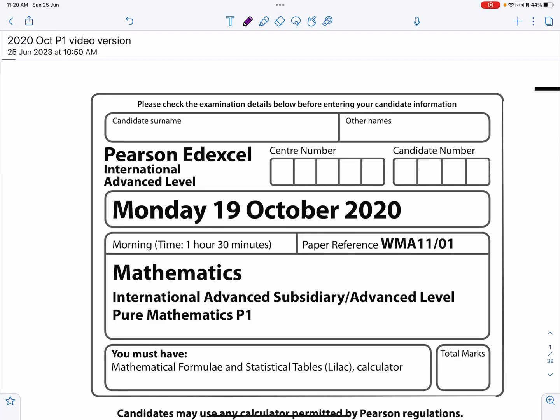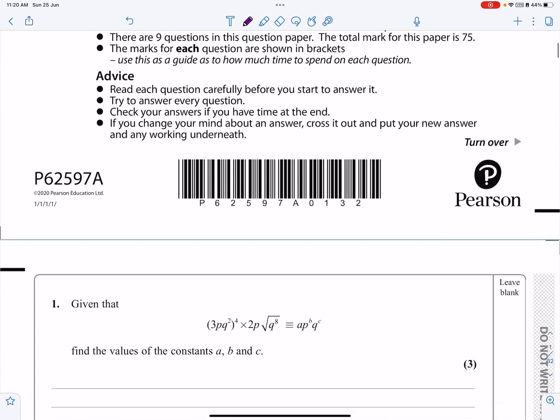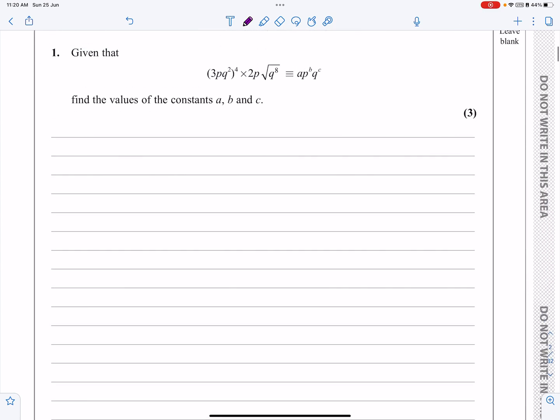Okay, this is the P1 paper from October 2020. We're going to look at question number 1 here, which is an index laws question. Let's get started, it's only worth 3 marks, quite quick.